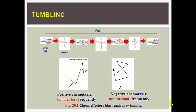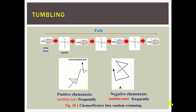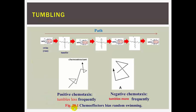In E. coli and many bacteria, they swim for a few seconds or less and then tumble — swim and tumble, swim and tumble. In the presence of an attractant, there are more swims than tumbles. In the presence of a repellant, there are fewer swims than tumbles.